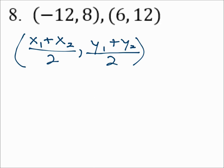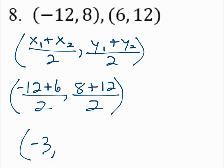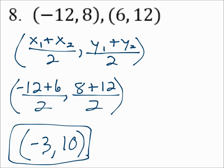Number 8: find the midpoint of the segment with endpoints (negative 12, 8) and (6, 12). Use the midpoint formula and substitute in. X1 is negative 12, X2 is 6, Y1 is 8, Y2 is 12. Remember, the midpoint formula answer is in parentheses with a comma between. Negative 12 plus 6 is negative 6, divided by 2 is negative 3. 8 plus 12 is 20, divided by 2 is 10. So the midpoint is (negative 3, 10).